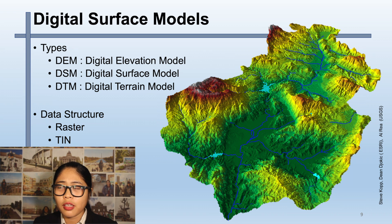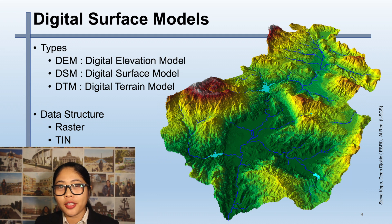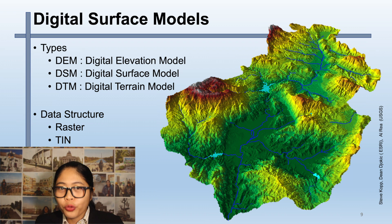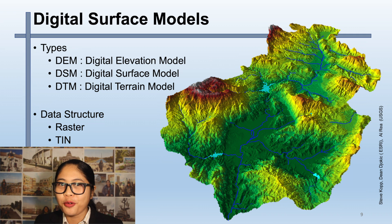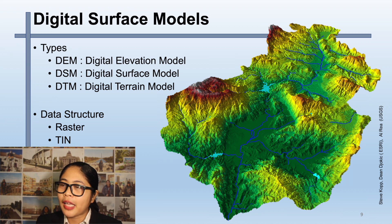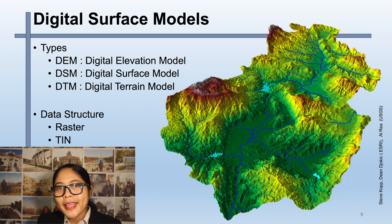We have types of digital surface models. First is DEM, or Digital Elevation Model. DEM is a 3D computer graphic that represents elevation data to represent terrain. DEMs are commonly of a planet — for example, Earth — but we can also do Mars, Moon, or an asteroid. A global DEM, or global digital elevation model, refers to a discrete global grid.